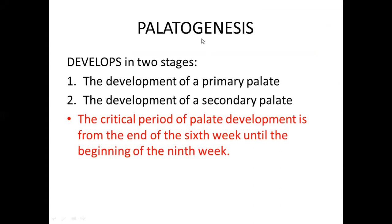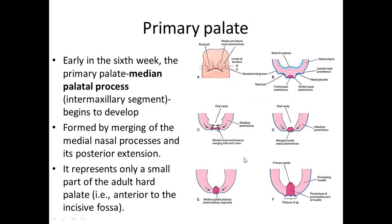The process of development of palate is known as palatogenesis and it develops in two stages: the development of a primary palate and a secondary palate. The critical period of palate development is from the end of the sixth week till the beginning of the ninth week, so any exposure to drugs or teratogens may hamper the process of palatogenesis.